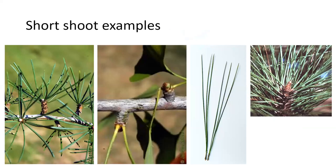Here are some examples of short shoots. We see those on some pines — there's actually a deodar cedar, which we'll learn, and ginkgo, which we'll also learn. White pine has needles bundled in fascicles, just an example of a type of short shoot. And then you can see them on a pine tree.